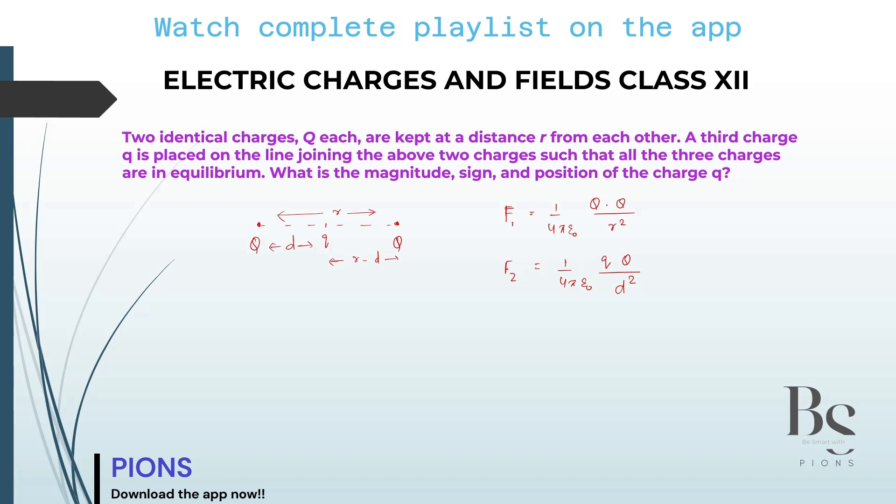So here it is F1 and that is our F2. Now what you have to do? If the whole system is in equilibrium, you will put F1 equal to F2. The net force will be equated. So if it is equated, then we can put here 1 by 4π epsilon naught cancels. You are left with Q square upon R square equals QQ by D square. Let's cancel one Q with one of the Q. So you are left with Q by R square equals small q by D square.